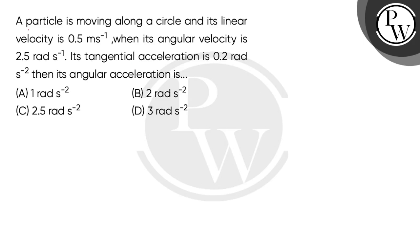Hello children, let's read the question. A particle is moving along a circle and its linear velocity is 0.5 meter per second when its angular velocity is 2.5 radian per second. Its tangential acceleration is 0.2 radian per second square, then its angular acceleration is...